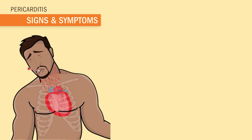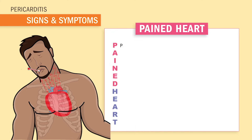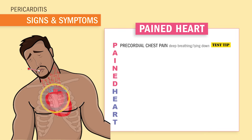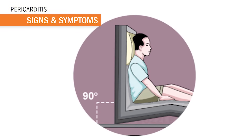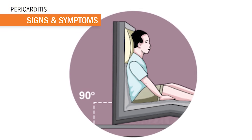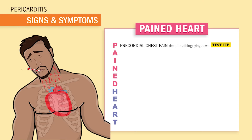So remember the acronym: PAINED HEART. P is for precordial chest pain — and this is a test tip. This kind of chest pain is from a friction rub that radiates to the left side of the neck, shoulder, or back. Pain worsens with deep breathing and laying supine, but write this down: the pain gets better when sitting up and tripoding or leaning forward.